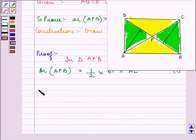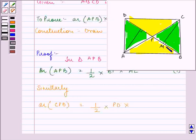Similarly, area of CPD is equal to half into base, that is PD, into altitude, that is CM. This is point M and this is point L. Let this be the second equation.